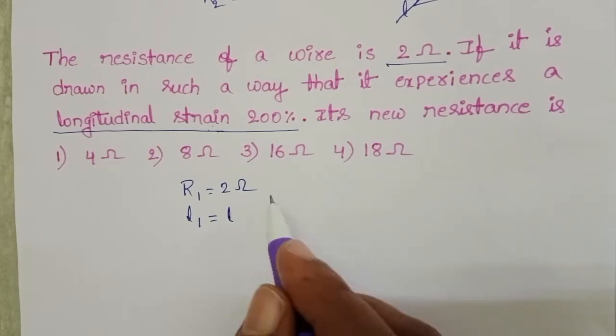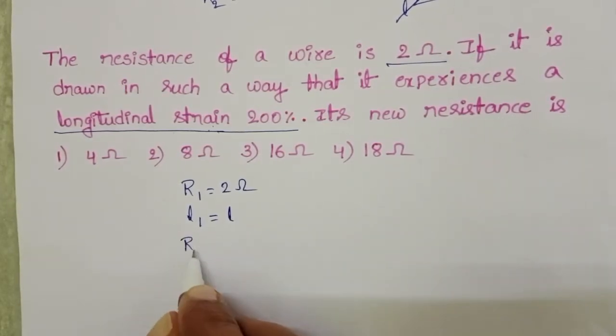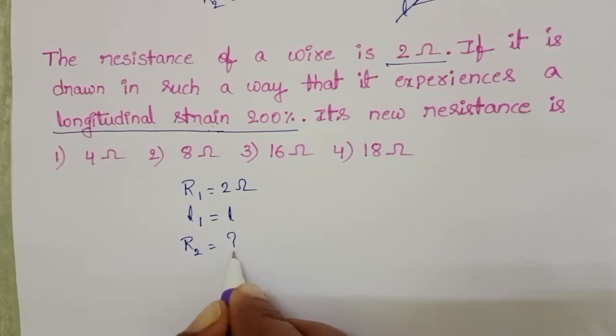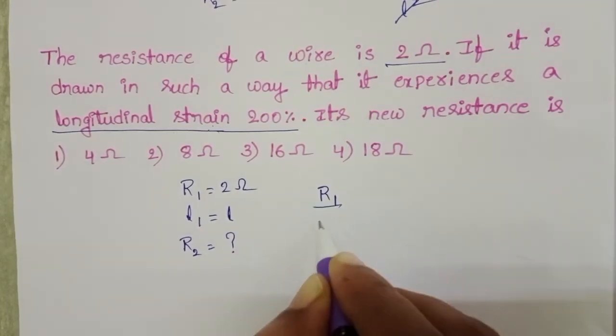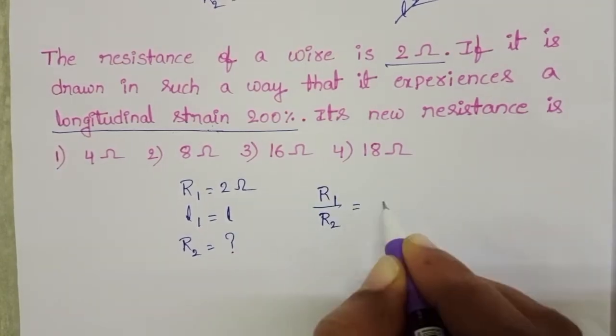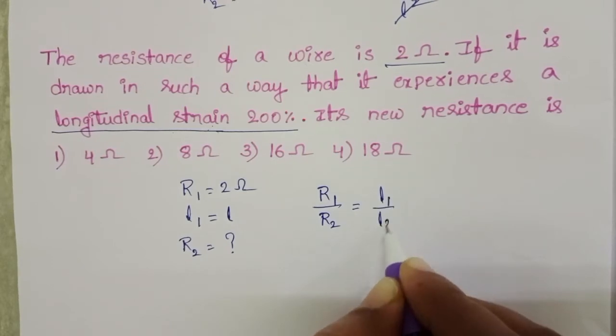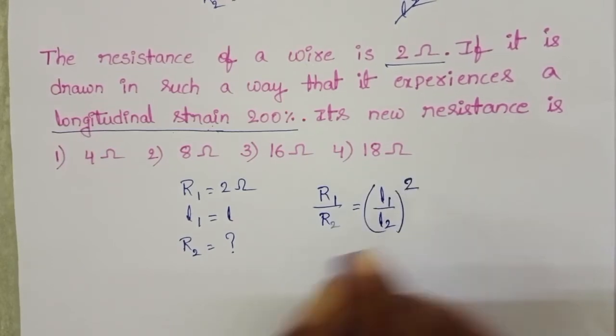Resistance of the wire also changes. We have to find out the resistance after longitudinal strain. R1 by R2 equals L1 by L2 whole square because volume is constant.